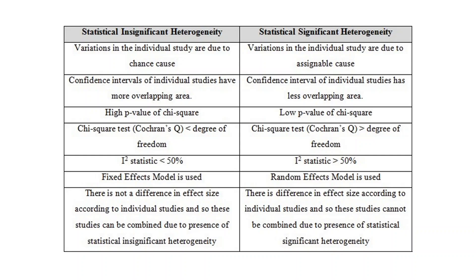Let's see the difference between statistically insignificant heterogeneity, which is due to chance, and statistically significant heterogeneity, which is due to assignable causes. In the first case, confidence intervals of individual studies have more overlapping area; in the second, there is less overlapping. Chi-square p-value will be more than 0.05 for insignificant heterogeneity and less than 0.05 for significant. The Cochrane Q will be less than the degree of freedom in the insignificant case and more in the significant case. I-square will be less than 50% for insignificant and more than 50% for significant heterogeneity. If we have statistically insignificant heterogeneity, we use a fixed effects model; if statistically significant heterogeneity is present, we use random effect models, and our interpretation will be from the random effect model.